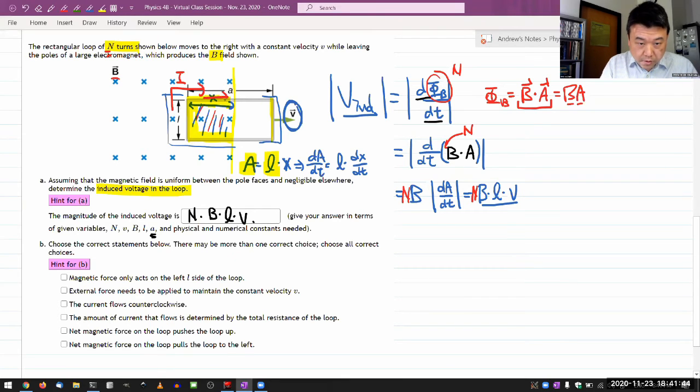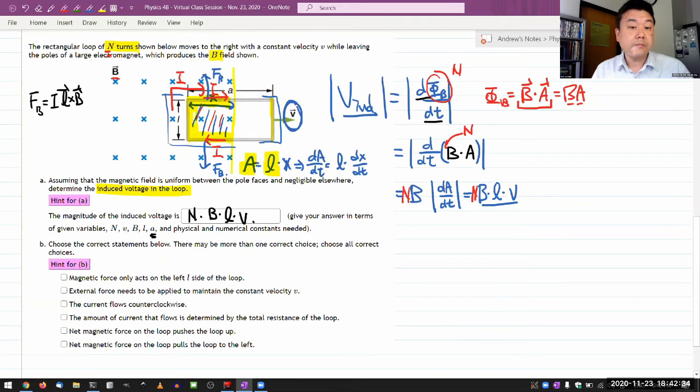So at this top portion, there's a current flowing this way. At this bottom portion, there's current flowing this way. And you might remember the expression for the magnetic force on a current carrying loop or current carrying wire, which is current times L cross B. And this L here, it's perpendicular to the magnetic field. So I L cross B. So there's actually an upward force on this segment of the wire. So it's not technically right that magnetic force only acts on the left side. It also acts on the top and the bottom part. It's just that the net force on those cancels out. But if we had a loop made out of flexible material, you would see it expand maybe. So the first choice is not correct.